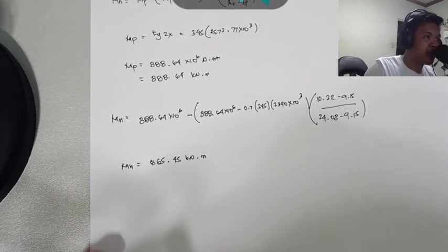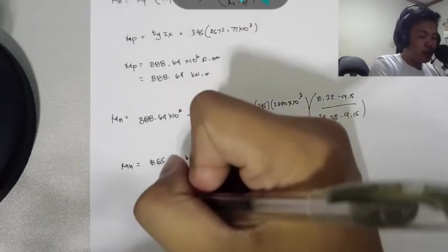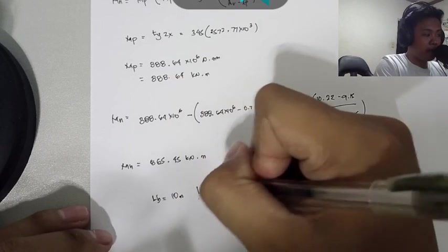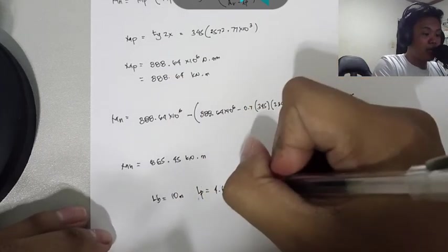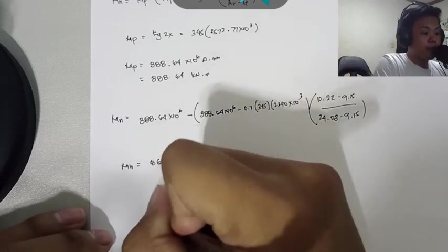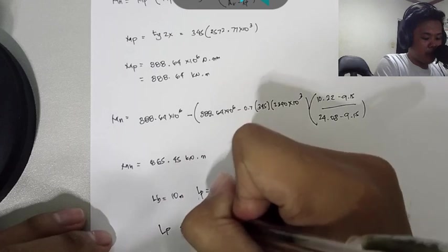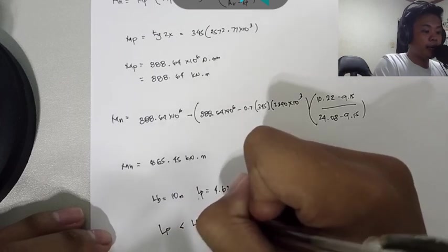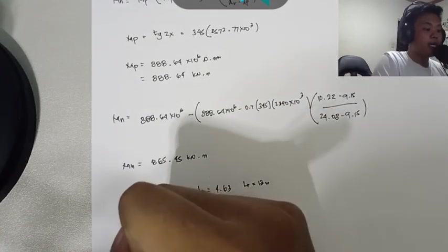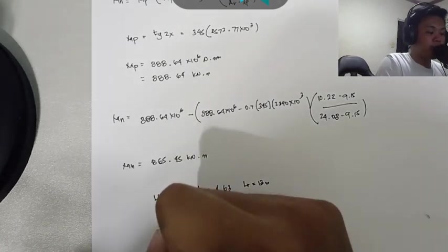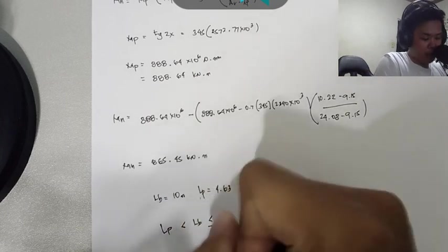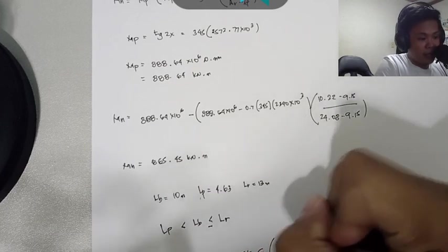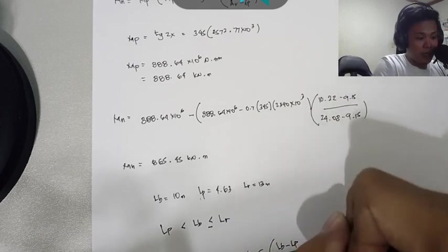What's our next step? We'll check if it will buckle. From the given we have a value of LB of 10 meter, LP of 4.63, and LR of 13 meter. We can see that LP is less than LB and less than or equal to LR. Because of that, we have a formula: MN equals CB multiplied by (MP minus (MP minus 0.7 FY SX) times (LB minus LP) over (LR minus LP)). This should be less than or equal to MP.